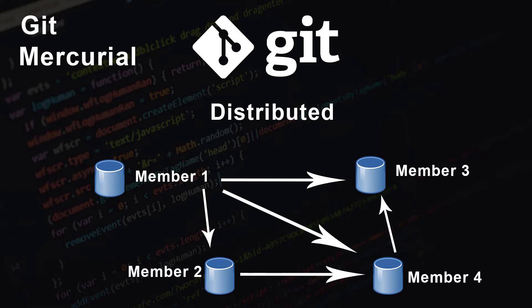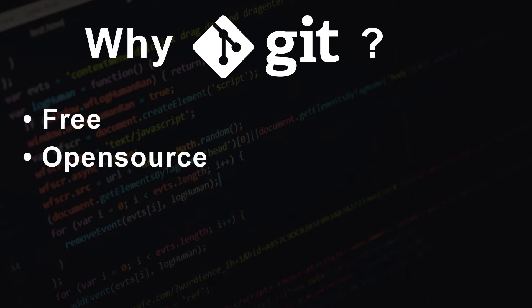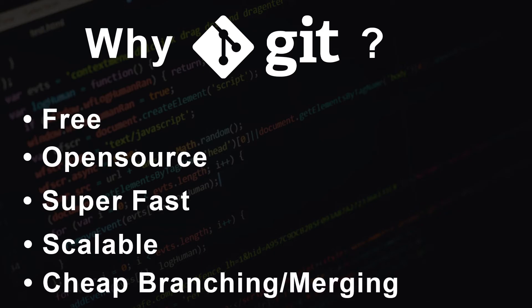Out of these, Git is the most popular version control system in the world, because it is free, open source, super fast and scalable. Operations like branching and merging are slow and painful in other version control systems like Subversion or TFS, but these are really fast in Git. We will talk about this later.